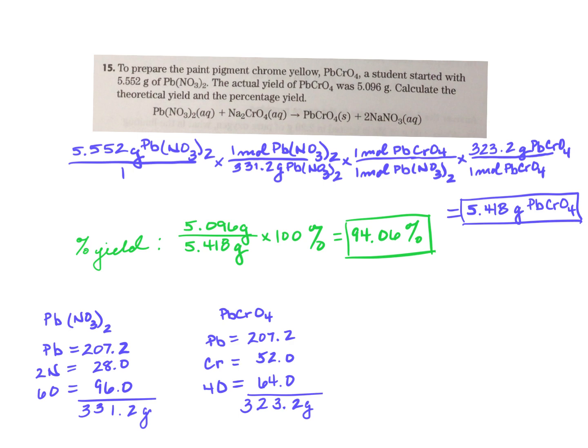So the actual yield of the lead chromate was 5.096 grams. So they're giving you the actual yield. They want you to calculate the theoretical yield, which is exactly what we did in number 14, and then find the percent yield. So this is going to be set up very similarly to the last couple of problems. You're going to start with what you're given, that 5.52 grams of lead nitrate. You're going to convert that to moles of lead nitrate.